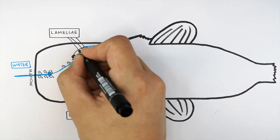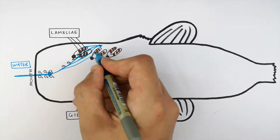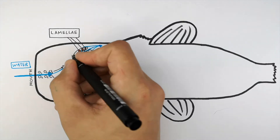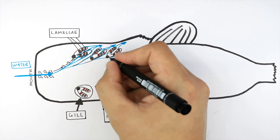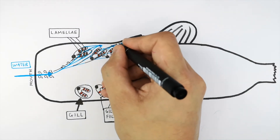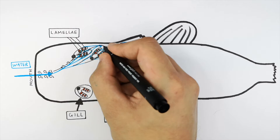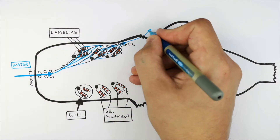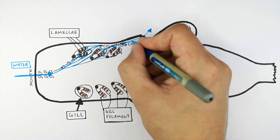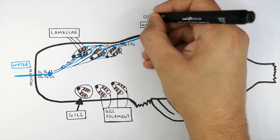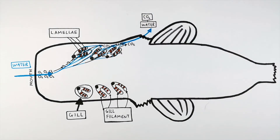Oxygen is then transferred into the blood capillaries through the lamellae which are on the gill filaments, and carbon dioxide is transferred out of the lamellae and the gill filaments into the water. The water that leaves the fish will have a lower concentration of oxygen and a higher concentration of carbon dioxide dissolved in it, because carbon dioxide is a by-product of respiration.